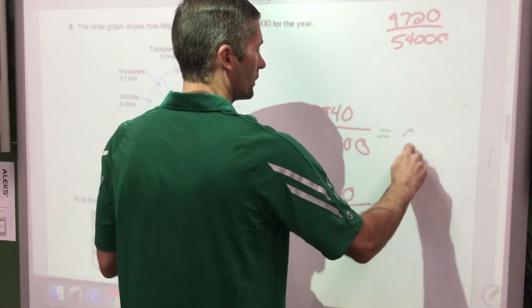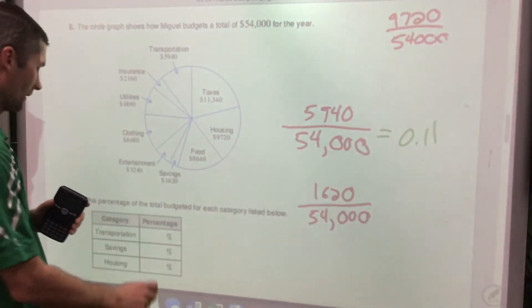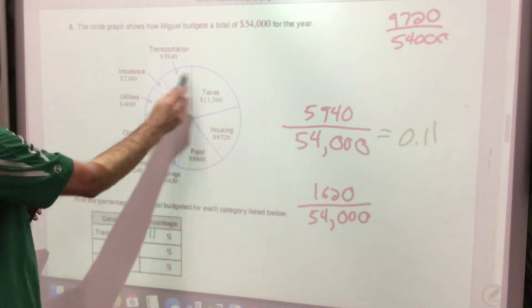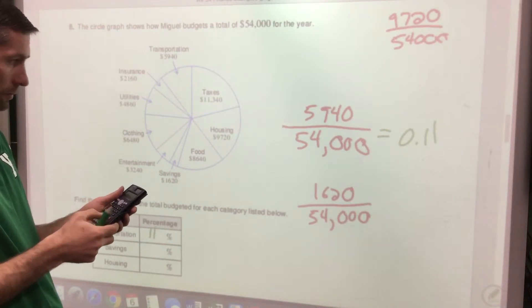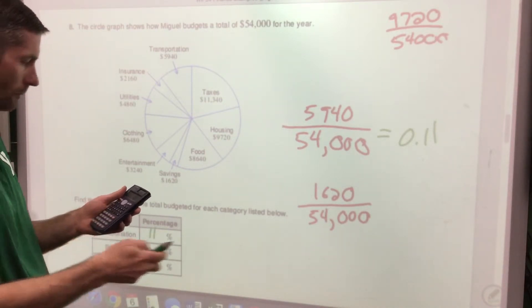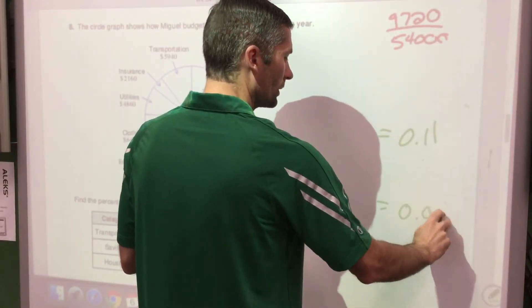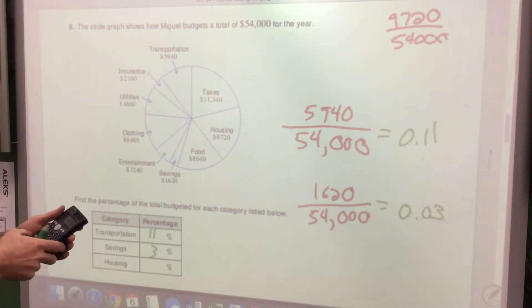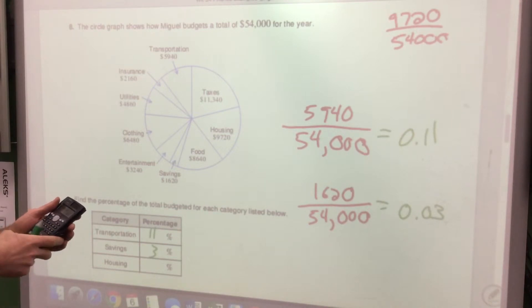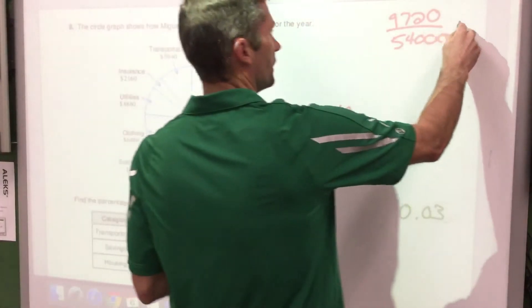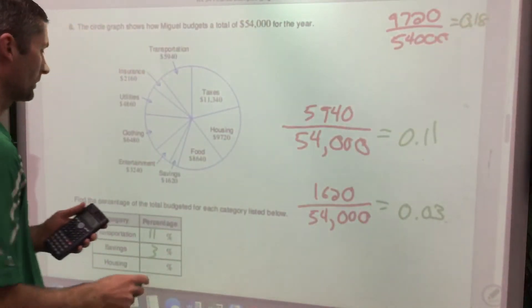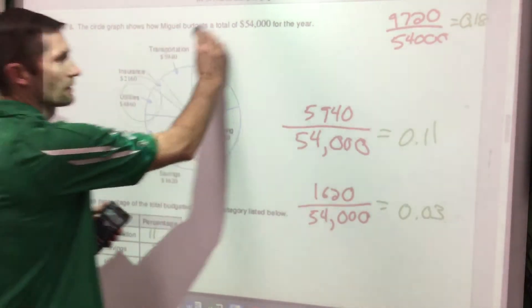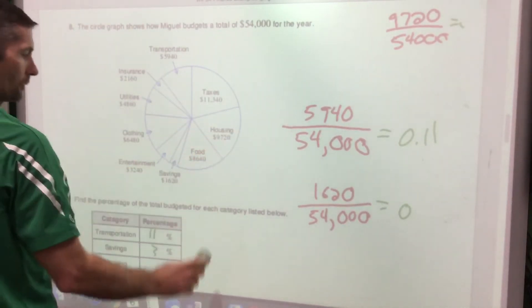Transportation comes out to 0.11, which is 11% — looking at that slice, it's about 10% of the whole. Savings is 0.03, so just 3% — a small sliver, not saving enough! Housing is 0.18, or 18% — he's doing pretty well there. To find these percents, divide the category amount by the total.